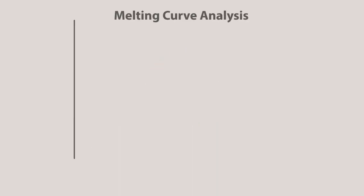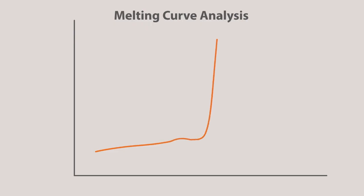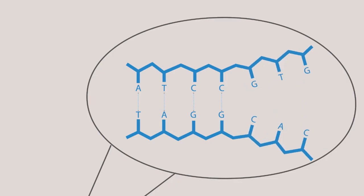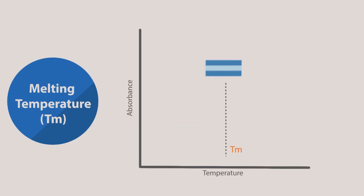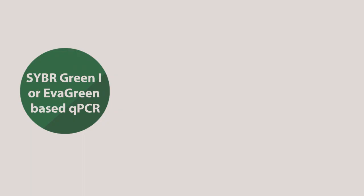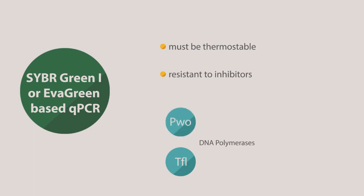The melting curve analysis enables users to distinguish the amplified product through plotting fluorescence as a function of temperature. As DNA is heated, it weakens and eventually breaks the hydrogen bonds that hold the two single-stranded DNA molecules together. This process is called DNA melting or denaturation. Melting temperature, or Tm, is defined as the temperature at which the DNA molecule is in mid-transition between the fully-coiled and fully-denatured states. For SYBR Green 1 or EvaGreen-based qPCRs, the polymerases used must be thermostable and resistant to inhibitors, such as Tfl, Pwo, Tth, and Pfu DNA polymerases.